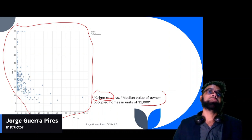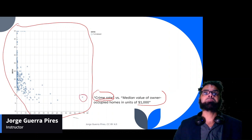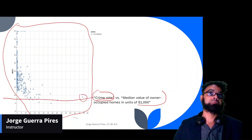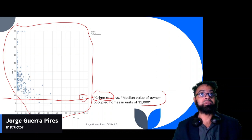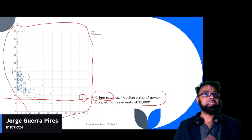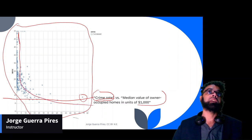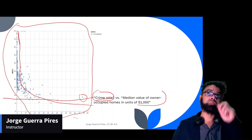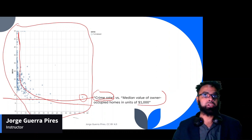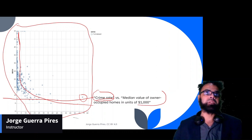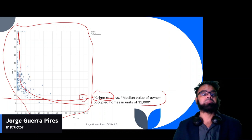If you have a very high crime rate, the price of the house is going to drop. That one is very easy to see, but that's not always the case. As you can see, the price of the house is going to fall exponentially as the crime rate increases, which is not a surprise.